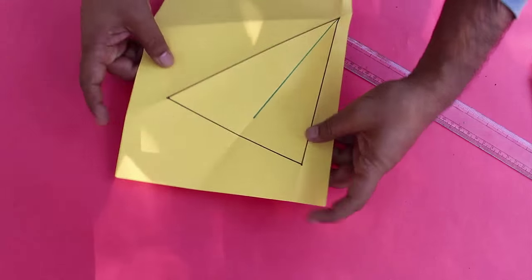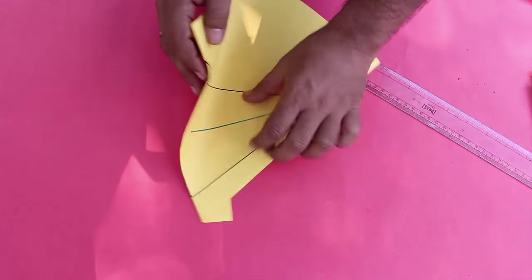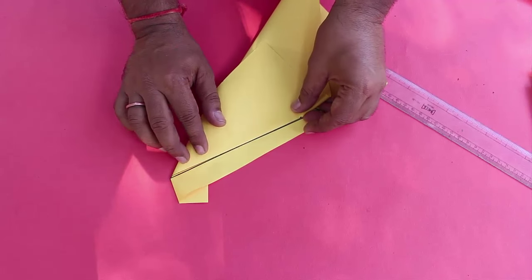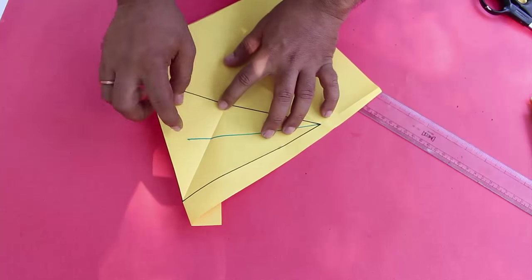We will then fold the third side C of the triangle. Now place C side on side B to get the second angle bisector.